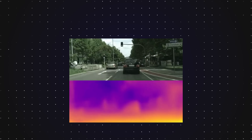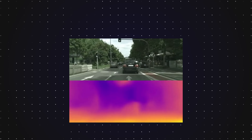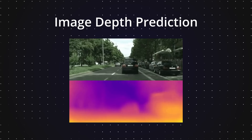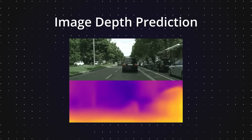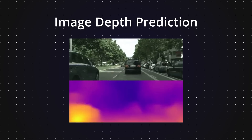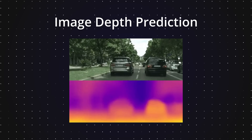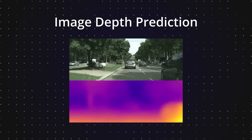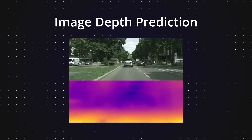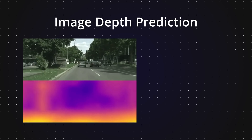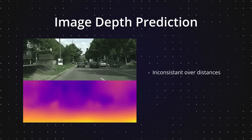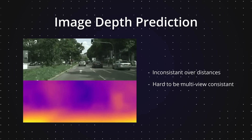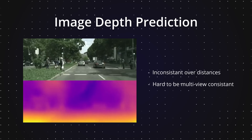The team then explored alternative methods. One such method is to employ depth prediction, where the network predicts a depth value for each pixel, creating depth maps. These maps, although visually appealing, present their own challenges when transformed into 3D point clouds. They can also be inconsistent over distances, making it hard to create a uniform 3D model from eight different depth maps.